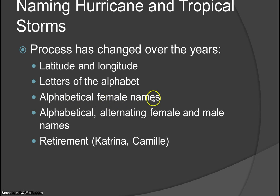The naming of hurricanes and tropical storms has changed over the years — originally based on latitude and longitude, then letters of the alphabet, then female names only, and now alternating female and male names in alphabetical order. Names are retired when storms cause extreme devastation: Katrina, Camille, and now Sandy have all been retired.